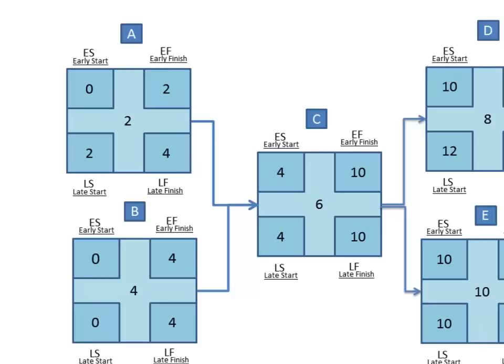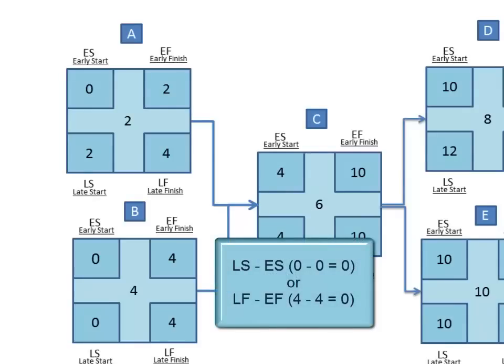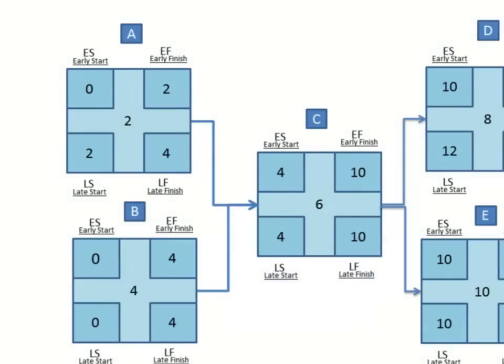Let's head to task B now. To calculate the float for task B is either late start minus the early start, or zero minus zero, or you could calculate the late finish minus the early finish, which is four minus four. Again, either of these calculations equals the same number, which of course is zero. So B has zero float.